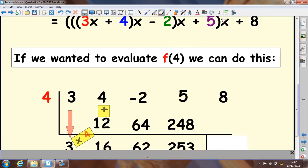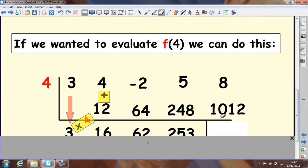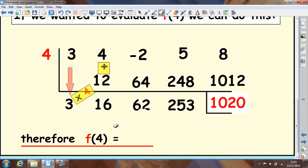Next, you would multiply all of that by x, which is 4, and you get 1012. And finally, you would add on the 8 at the end. So, to evaluate f(4), the answer is 1020 using this table system.